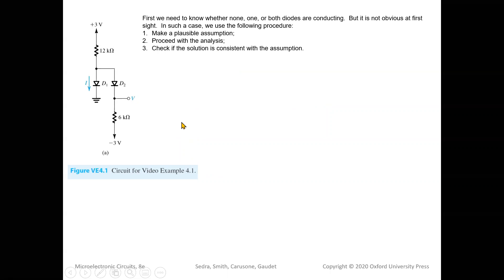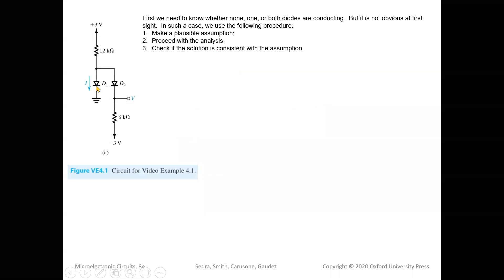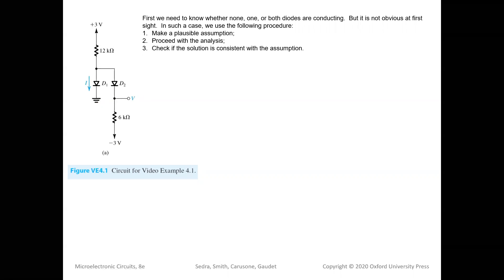Now let's look at a more complicated example with two diodes D1 and D2, a 12 kΩ resistor, a 6 kΩ resistor, +3 V on top, −3 V at the bottom, and ground in the middle. For diode circuits we need to determine the operation modes of the diodes — whether none, one, or both are conducting. With two diodes it is not obvious at first sight what the operation mode of each diode is.